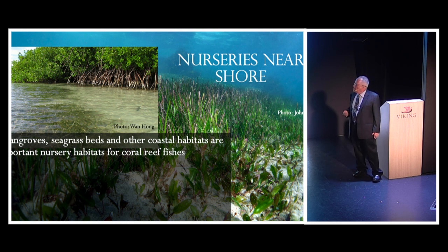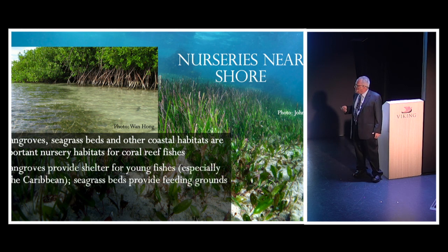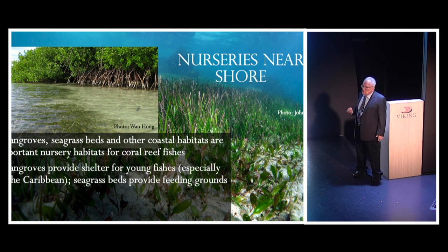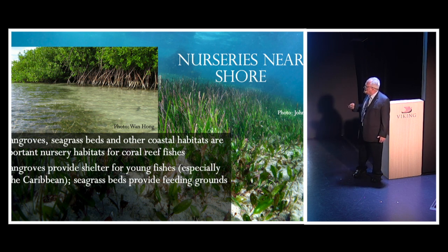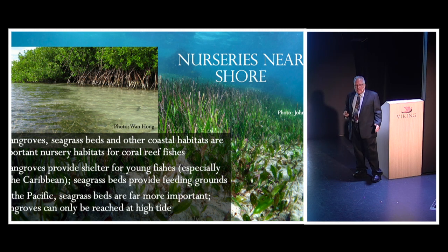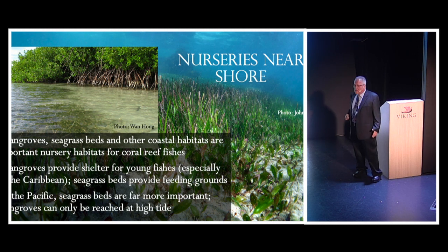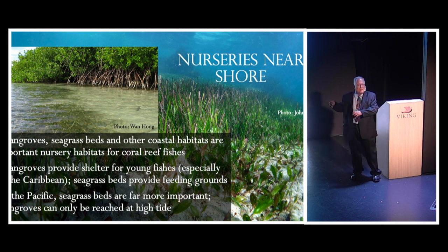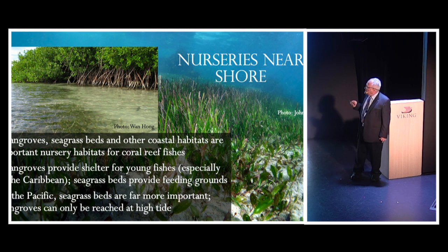Mangroves and seagrass are very important for the health and continued growth of the reef. It depends where you are which is more important — mangroves seem more important in the Caribbean, while seagrass beds are important feeding grounds for young fish. In the Pacific, seagrass beds are a lot more important than mangroves, largely because many mangroves are exposed at low tide so fish can't stay among them.